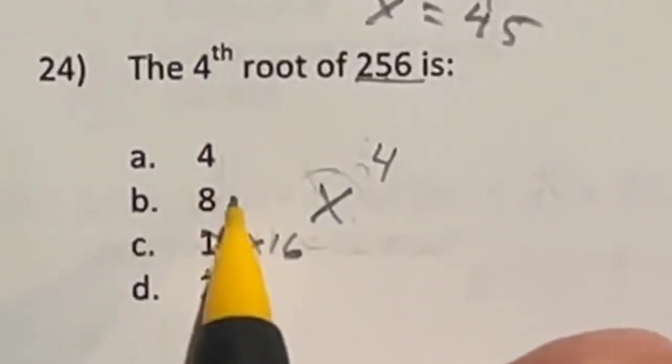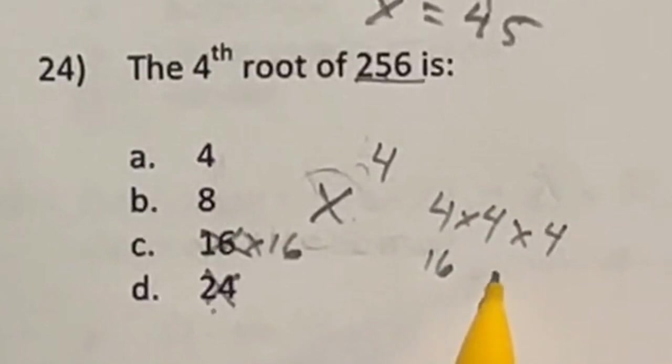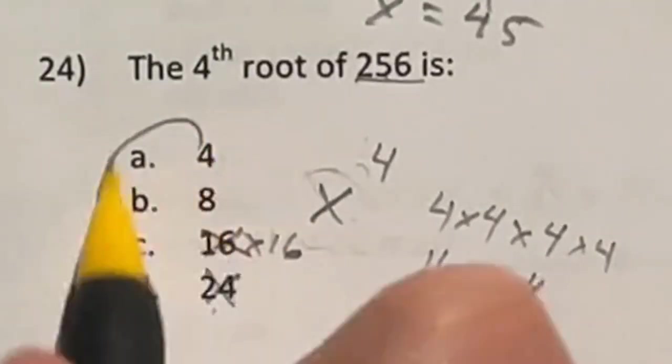So we're looking at 4 or 8. Let's go ahead and try 4. 4 times 4 is 16 times another 4 is 64 times another 4 is going to end up giving us the 256 that we need. So A is our final answer.